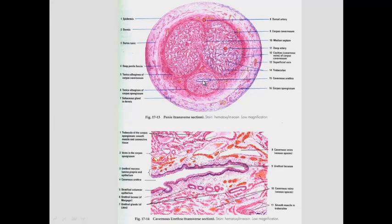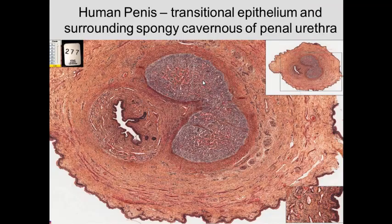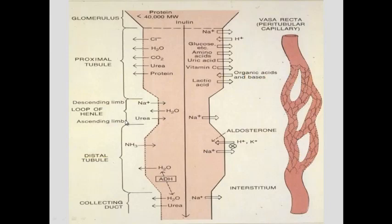If we follow the urinary tract out, you have the urethra. In the case of the penis, we see the urethra could have transitional epithelium on there as well.